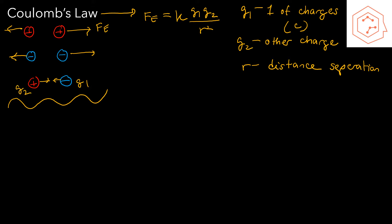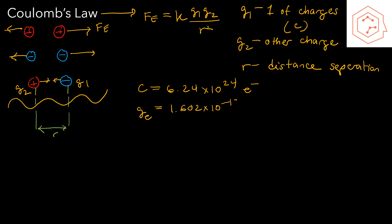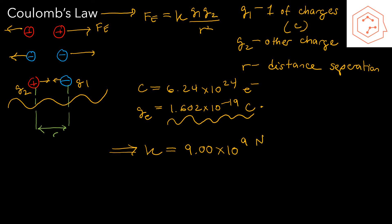The coulomb, which is the unit of charge, is equal to 6.24×10¹⁸ times the charge of an electron, which is the smallest possible charge. The charge of an electron, qₑ, is 1.602×10⁻¹⁹ coulombs. All charges that ever exist must be an integer multiple of this value. Knowing this, our k constant — known as Coulomb's constant — is 9×10⁹ N·m²/C².